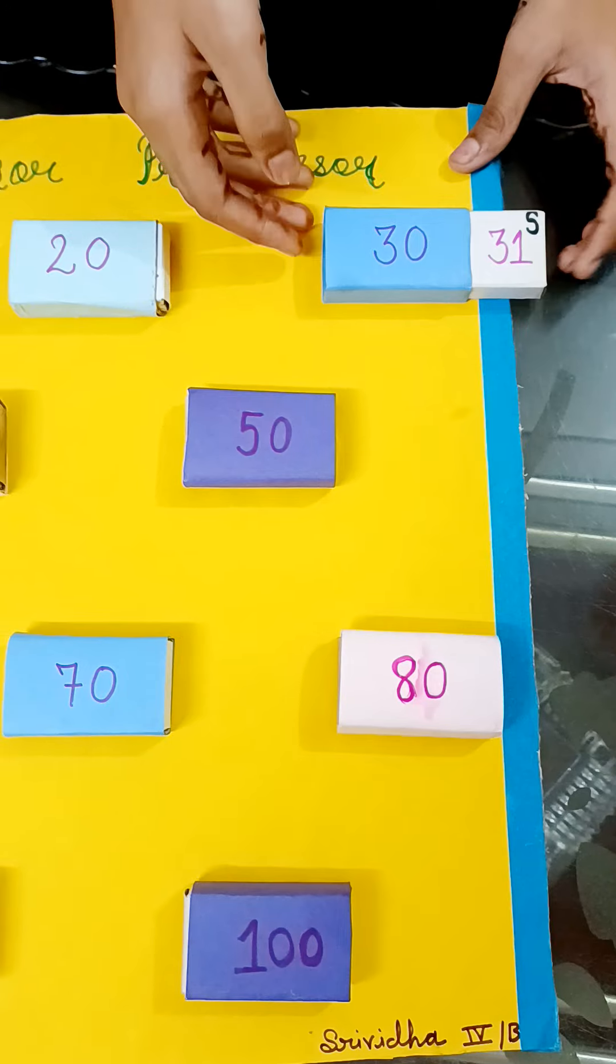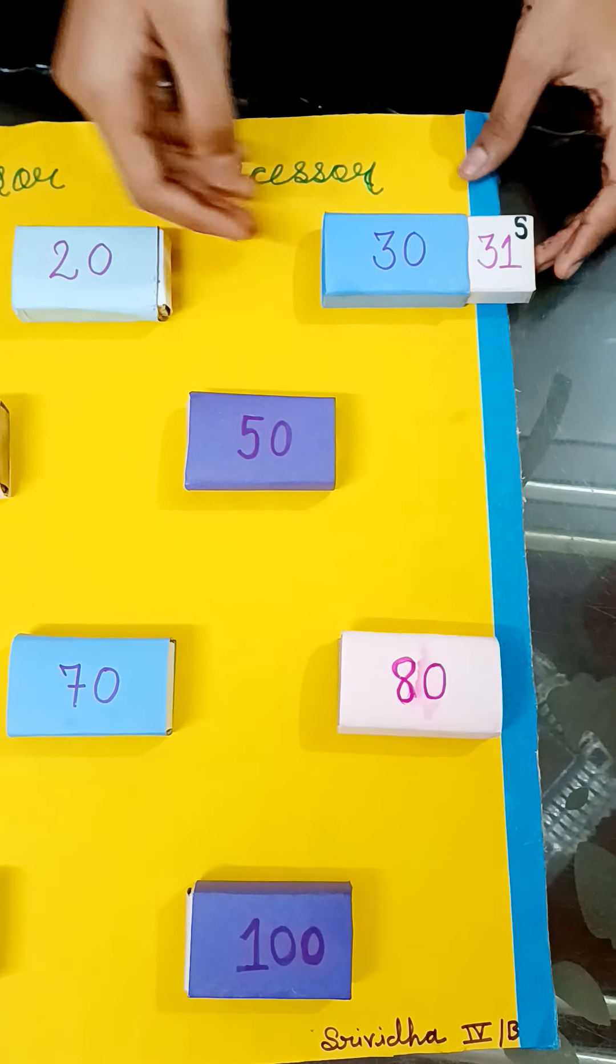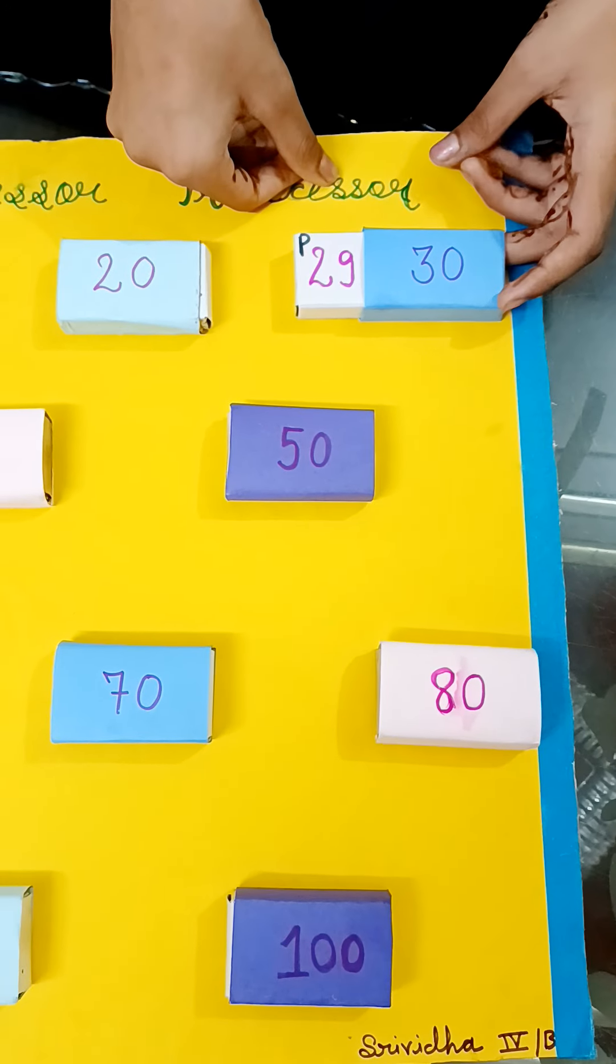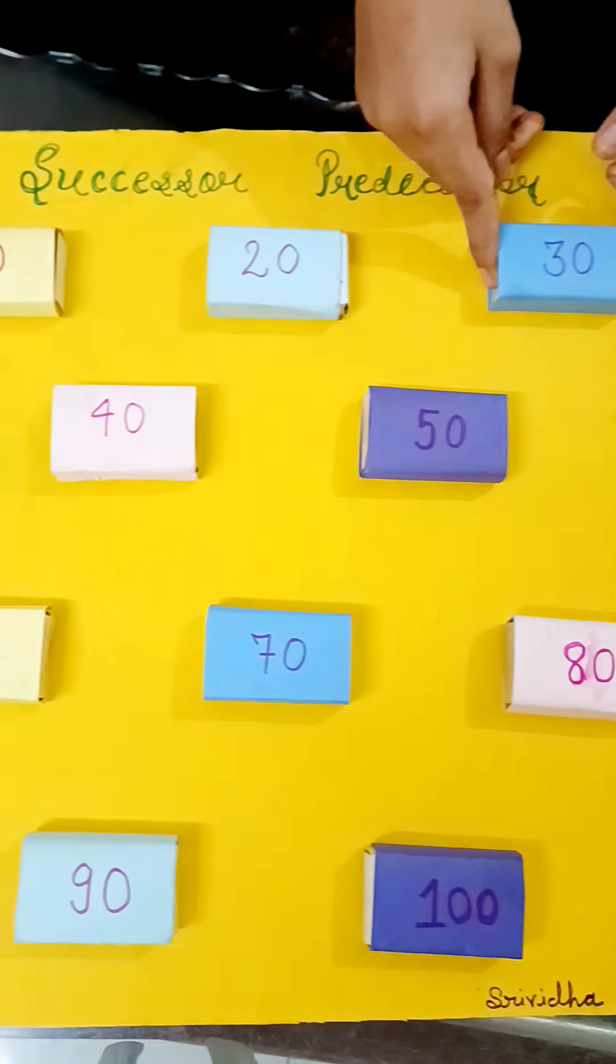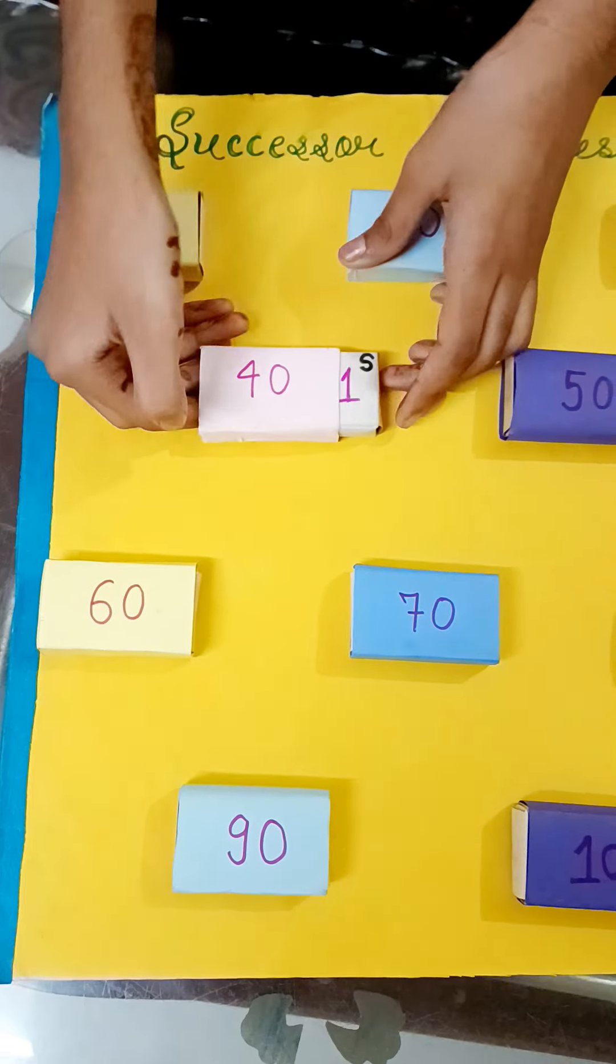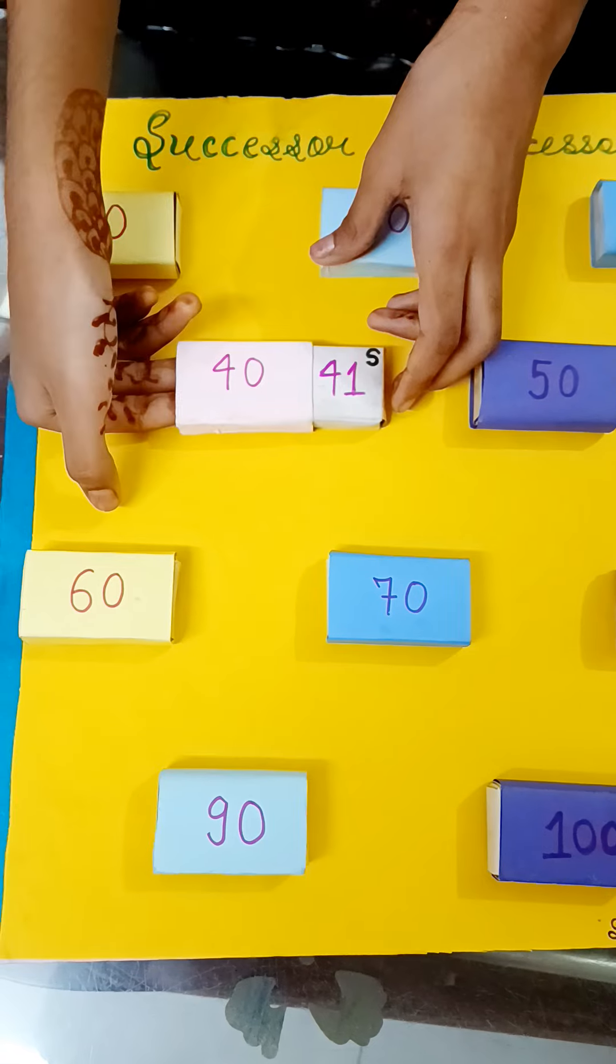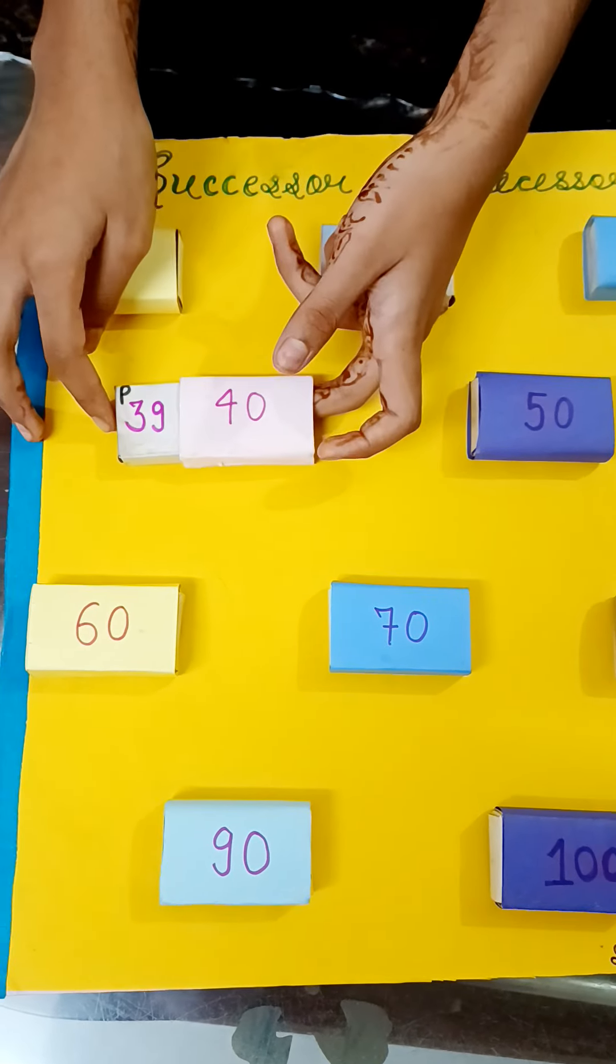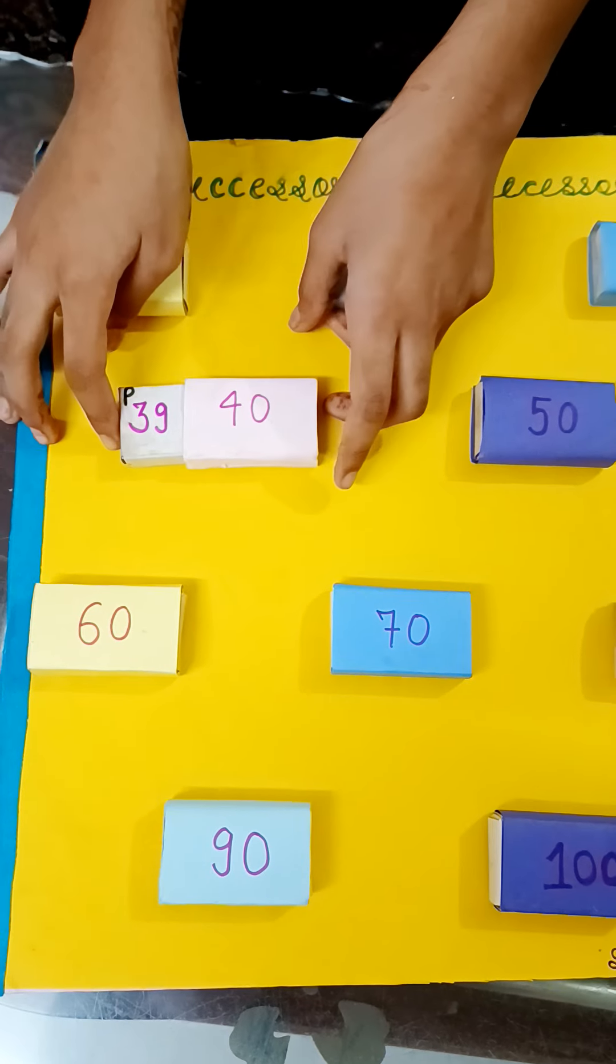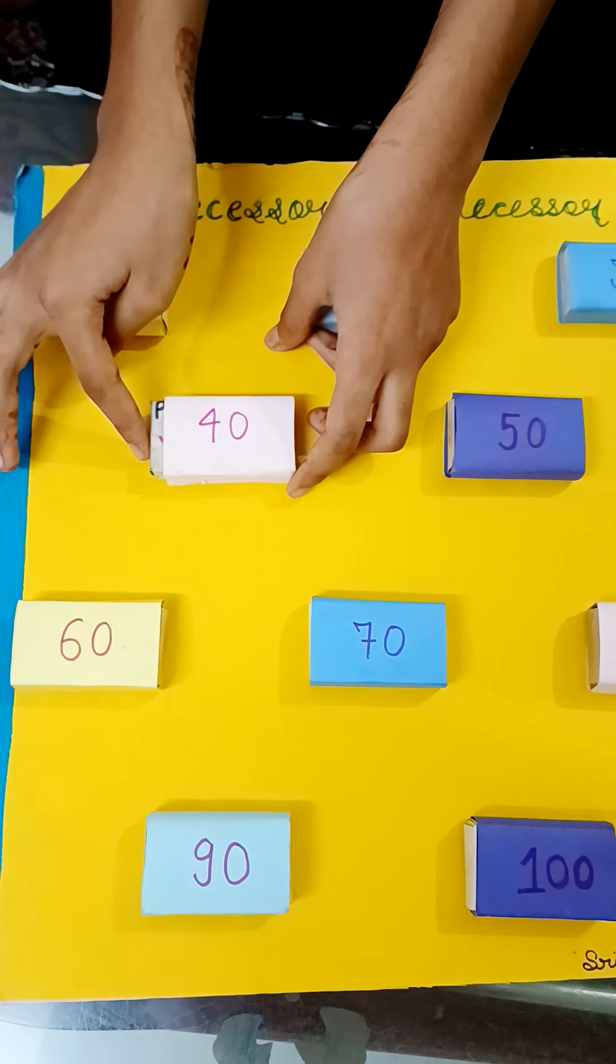31 is successor of 30 and 29 is predecessor of 30. 41 is successor of 40 and 39 is predecessor of 40.